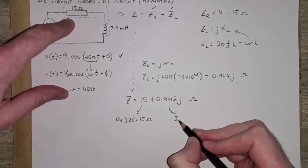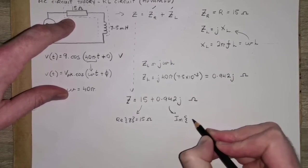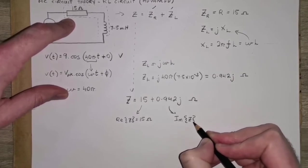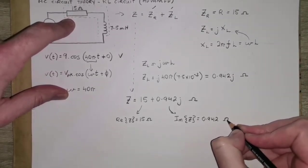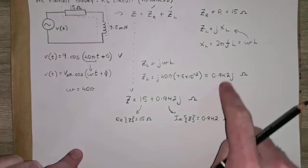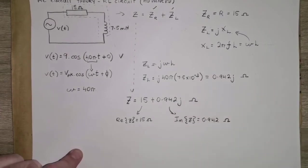And the imaginary part of that complex number is 0.942 ohms, and that represents the reactance of the circuit.